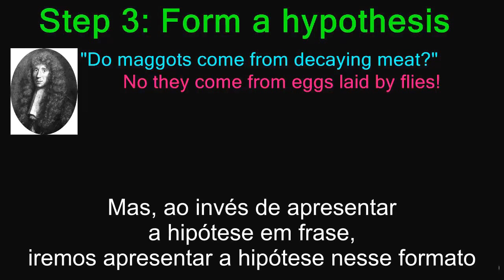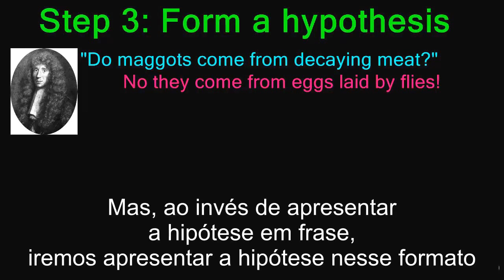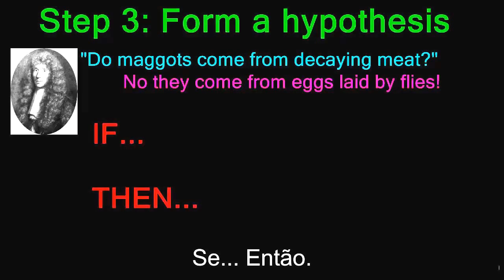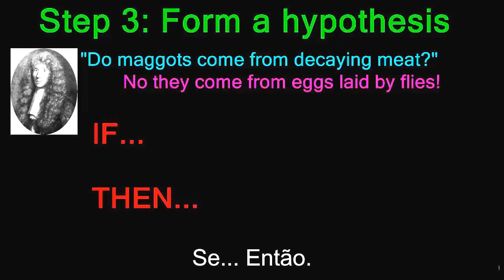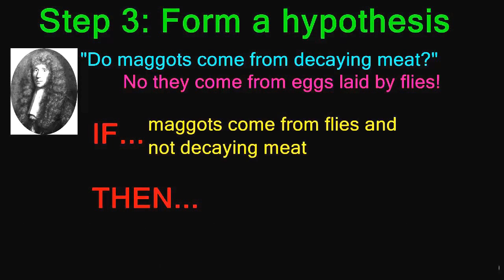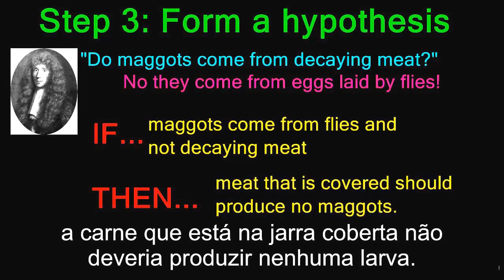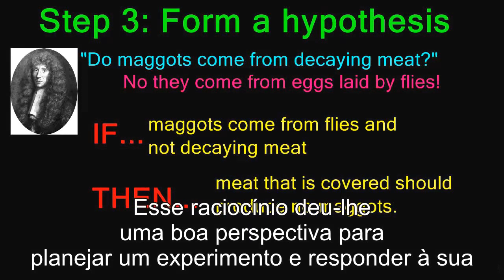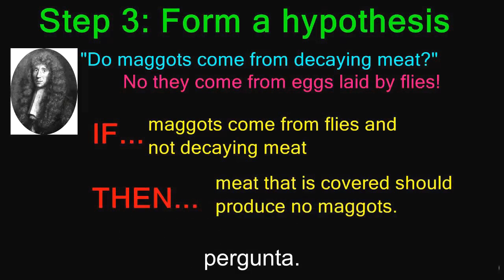Rather than just phrasing the hypothesis as a statement, we put it in an if-then format. As far as Redi is concerned: if maggots come from flies and not decaying meat, then meat that is covered should produce no maggots. This gives him a good outline for designing an experiment to answer his question.